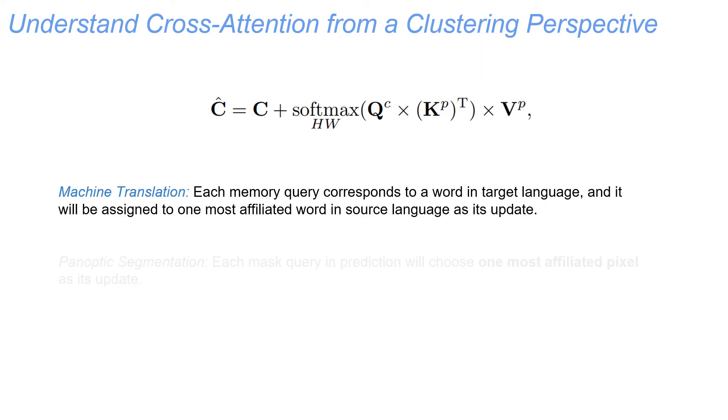For example, we may understand cross-attention when applied to an NLP problem, such as machine translation as follows. Each memory query corresponds to a word in the target language, and it will be assigned to one most-affiliated word in source language as its update.